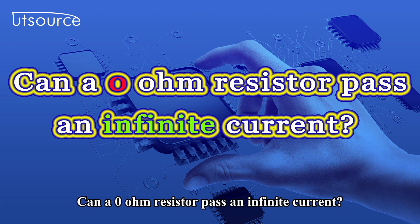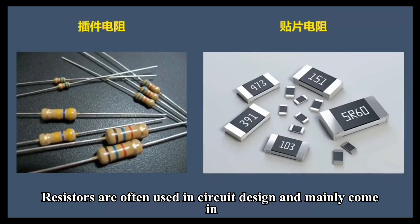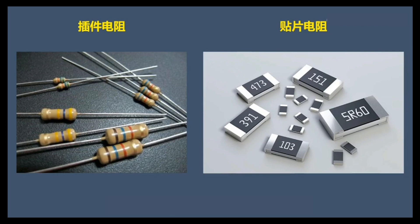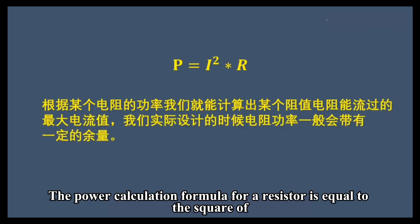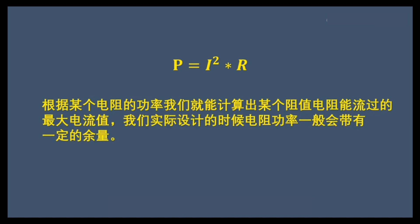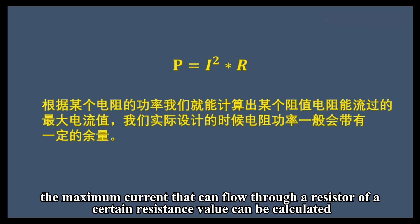Can a zero-ohm resistor pass an infinite current? Resistors are often used in circuit design and mainly come in the form of plug-in resistors and patch resistors. The power calculation formula for a resistor is equal to the square of the current flowing through it multiplied by its resistance value. Based on the power of a resistor, the maximum current that can flow through a resistor of a certain resistance value can be calculated.